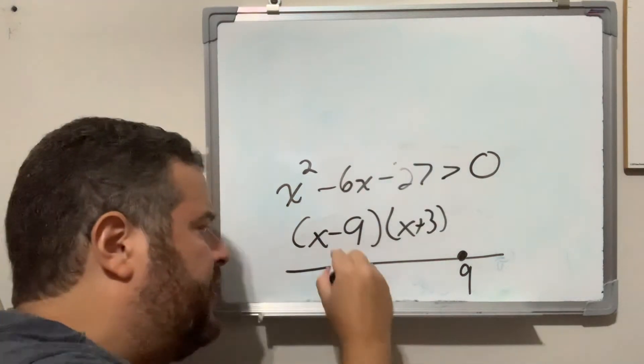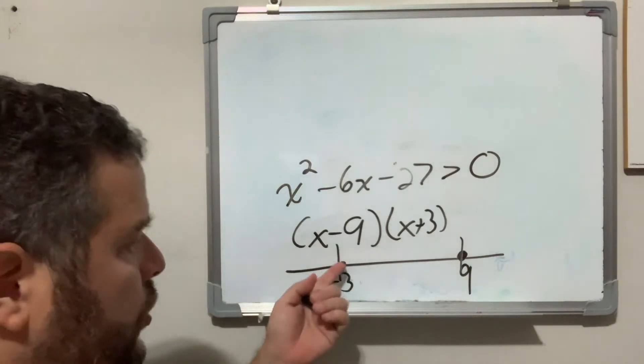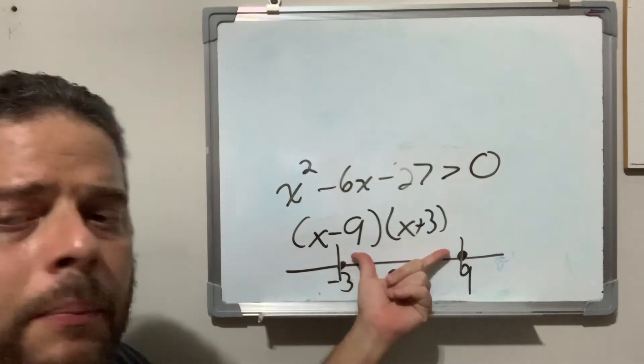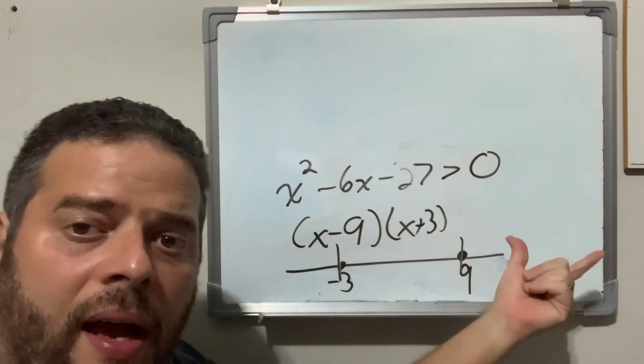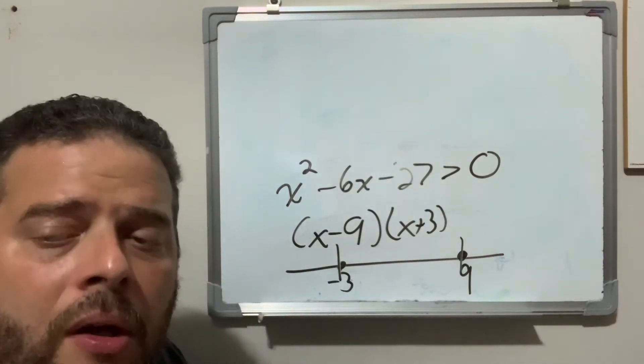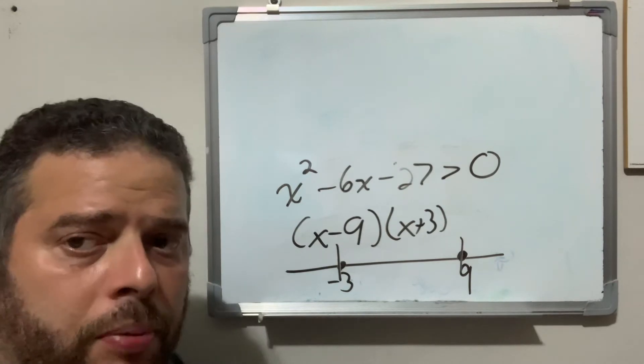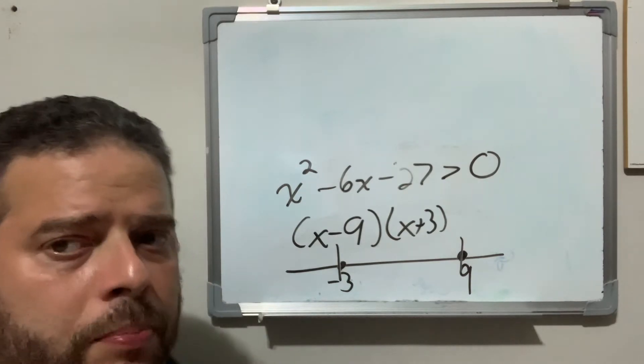Now in this case, it's going to give you three zones: to the left of this value, between these two values, and to the right of this value. Now all you have to do is plug in the values and just plug them in.